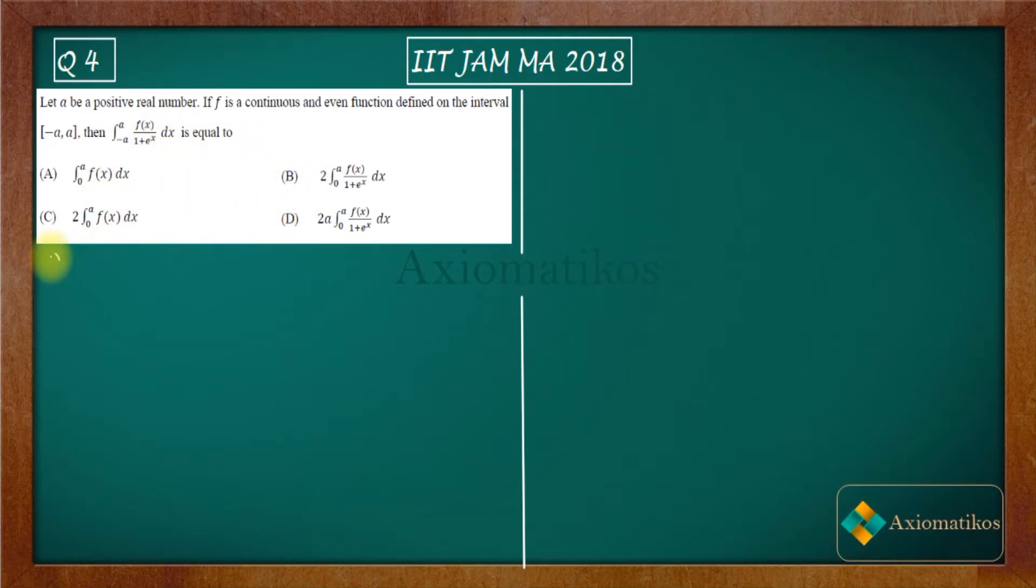I will begin by introducing a property of a definite integral, generally known as minus a to a f(x) dx. Suppose we have this integral, I can write this integral like this. This is a property of definite integral. You can easily prove it, but there is no need to prove, I will suggest you to just remember this property.